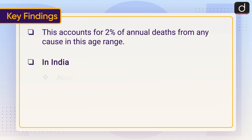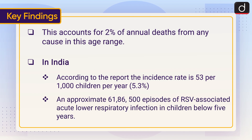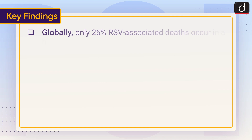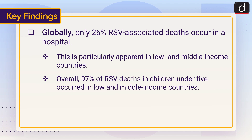In India, according to the report, the incidence rate is 53 per 1,000 children per year, that is 5.3%. There were approximately 61,86,500 episodes of RSV-associated acute lower respiratory infection in children below five years. Globally, only 26% of RSV-associated deaths occur in a hospital, which is particularly apparent in low- and middle-income countries. Overall, 97% of RSV deaths in children under five occurred in low- and middle-income countries.